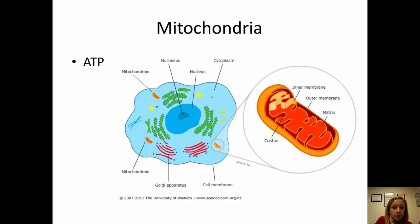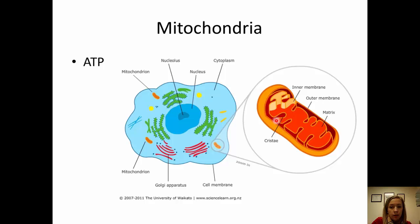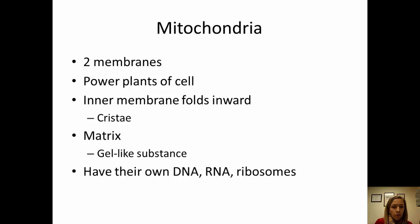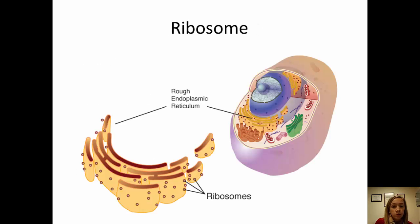Mitochondria are these little bean-shaped organelles, and there are many of them in most cells. They are the powerhouse of the cell — they make energy or ATP. They have inward folds called cristae and a gel-like matrix within. Mitochondria also have their own DNA, RNA, and ribosomes, so they can reproduce themselves.